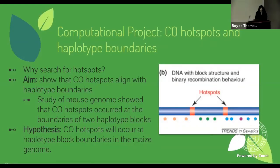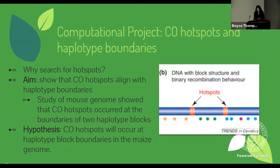Now to talk about my actual projects. The first one was computational — a study of crossover hotspots and haplotype boundaries. We want to know where hotspots are because we don't currently know. We want to search for locations where they occur at very high frequency, since that is where a lot of recombination also occurs. Knowing their locations makes way for future projects to study why hotspots occur there, and to engineer more hotspots. Expanding the crossover hotspot distribution to suppressed regions like the centromere would increase the allelic diversity available to plant breeders.